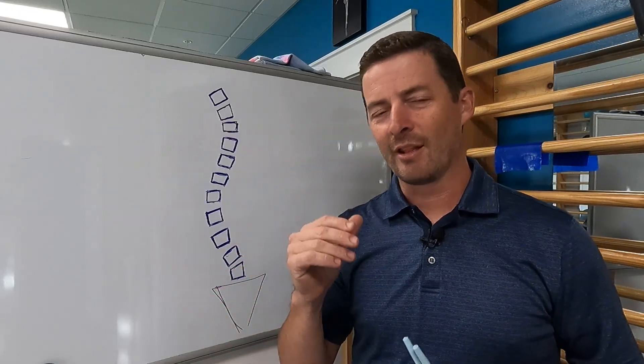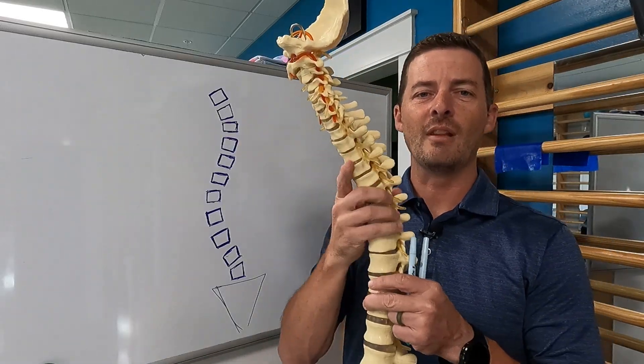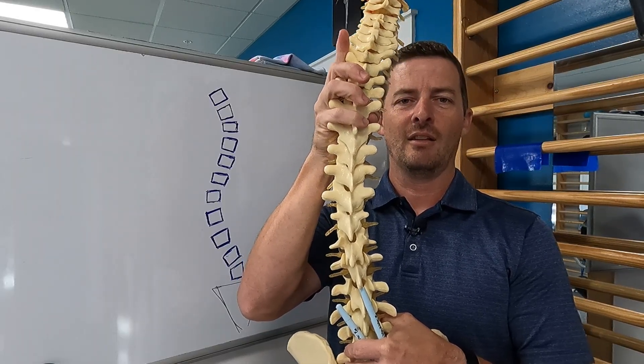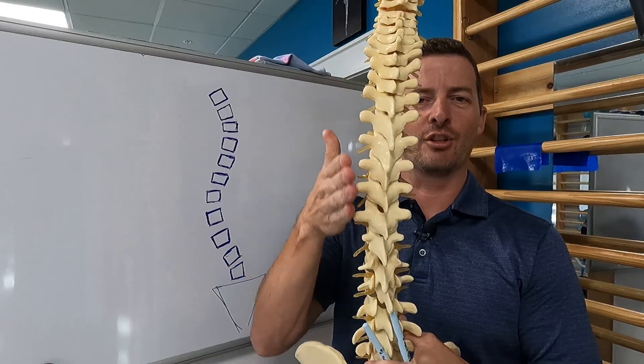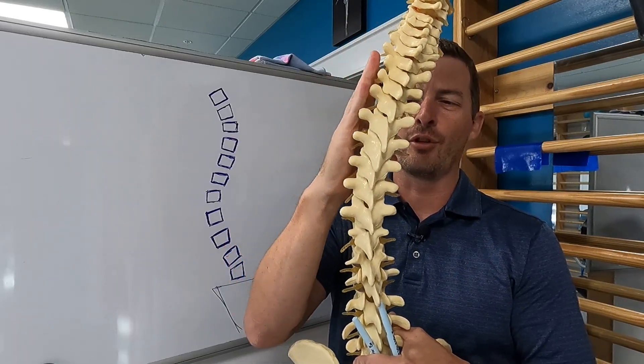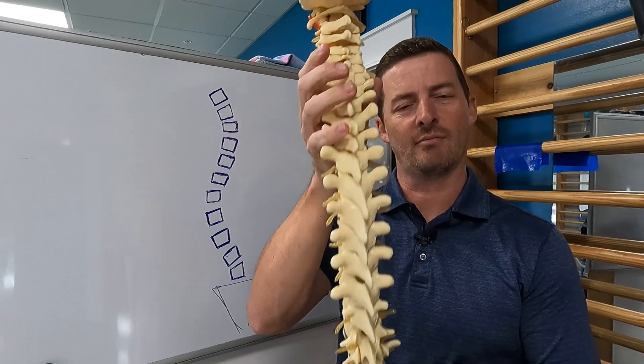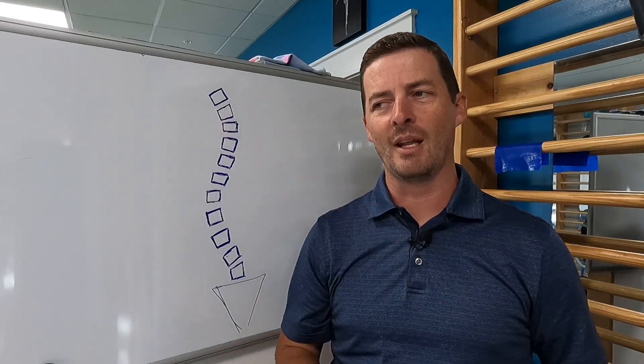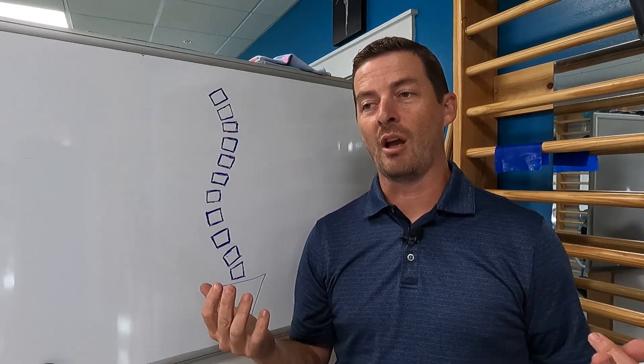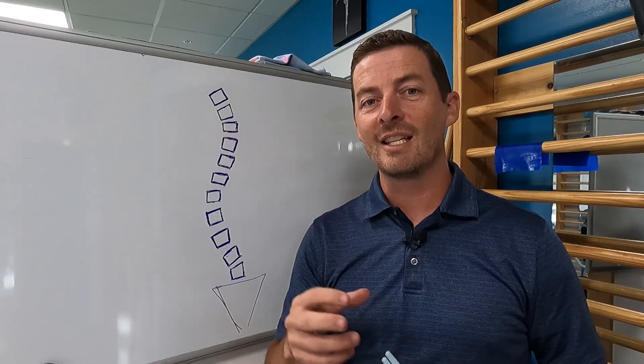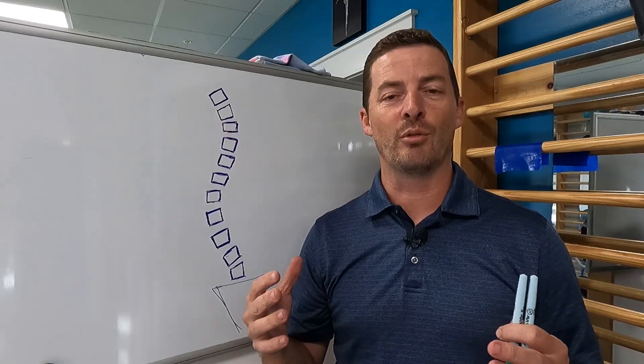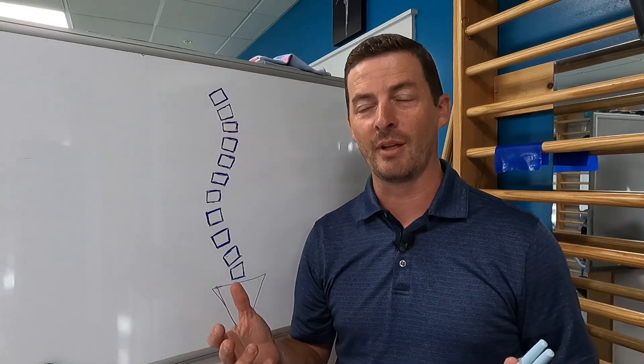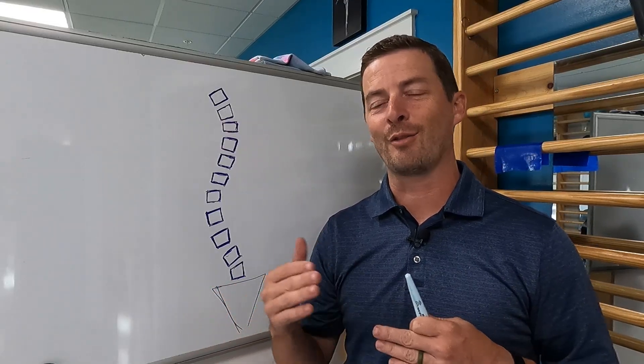If you're a physical therapist, that probably sounds very familiar, that the idea is if we have a curve, let me show you a curve here. If we have a curve like this, then we need to stretch the concavity to open that up, and then we need to strengthen the convexity for those muscles to pull that spine straighter. Thinking about it simplistically, that's something that may make sense. It's something we're taught and a lot of us still subscribe to. I still see this a lot online with people discussing how to treat scoliosis, and with medical professionals outside of physical therapy.